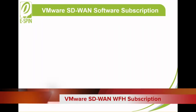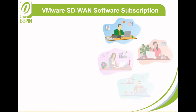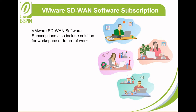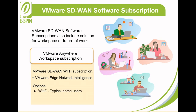The future of work has been greatly affected by the COVID-19 pandemic. Working from home has become a trend adopted by companies for resiliency. In recent years, more and more companies have started to allow employees to practice remote working as they realized its benefits to both employees and organizations. VMware SD-WAN software subscriptions also include a solution for the workspace or future of work. The VMware Anywhere Workspace subscription provides VMware SD-WAN work-from-home subscription for business users, which includes VMware Edge Network Intelligence. There are two options: Work from Home for typical home users, and Work from Home Pro for home users with higher bandwidth requirements.